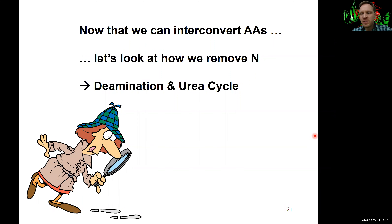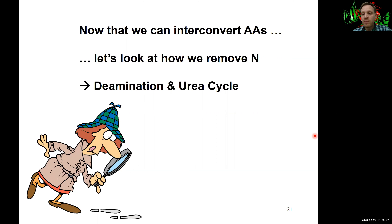Welcome back to lectures 14 and 15 on protein and amino acid metabolism, breakdown and synthesis. This is the third video in the series, following up on our introductory video on nitrogen metabolism and amino acid interconversion, and our second video on the aminotransferases. Now we want to understand how we can remove the nitrogen from the system — the next two major pathways are deamination and the urea cycle, and that's the focus of this video.